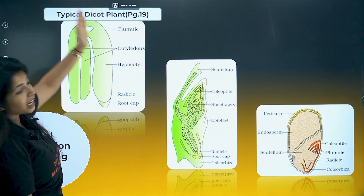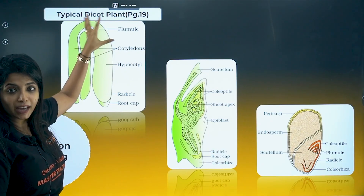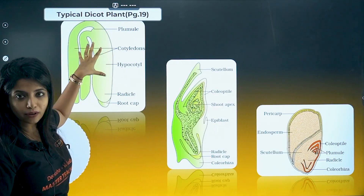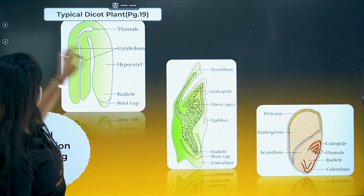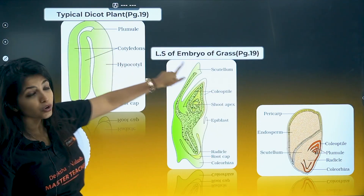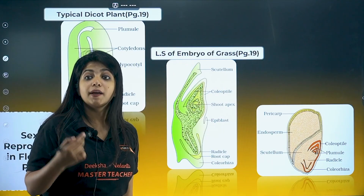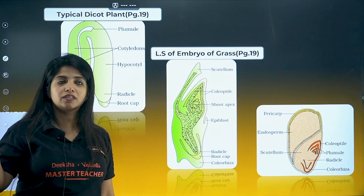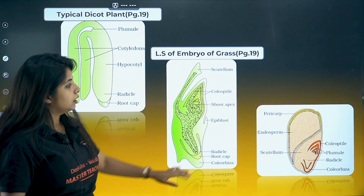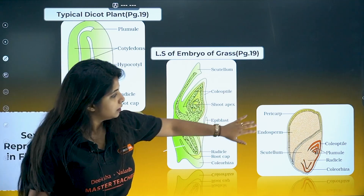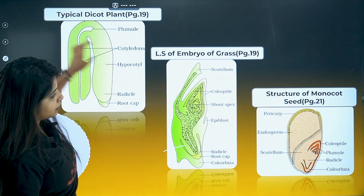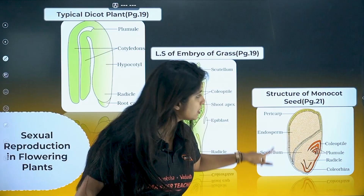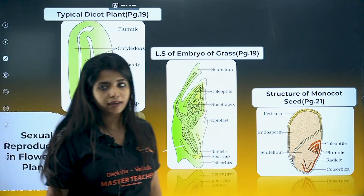Dicot embryo — mention all the things. This is monocot embryo. You can be asked about the embryo of grass — grass is a monocot, so don't get confused. Look for the labellings of all these diagrams.